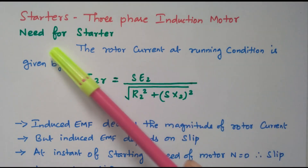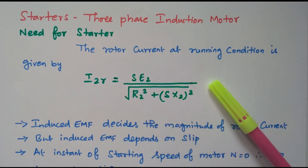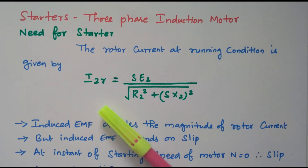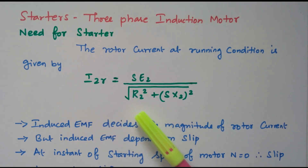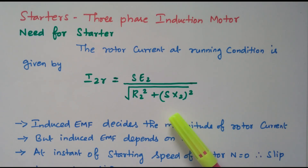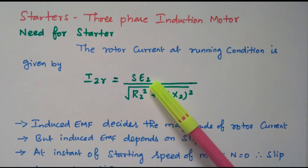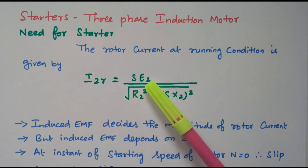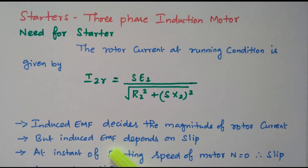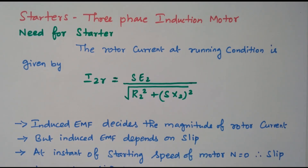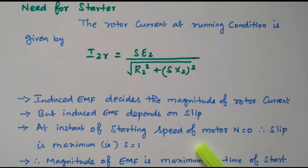Now we will go to the topic — the need for the starter. The rotor current at running condition is given by I2R equal to SE2 divided by the square root of R2 squared plus SX squared. The induced EMF decides the magnitude of the rotor current, E2, because the rotor current depends upon the induced EMF in the induction motor. The induced EMF depends upon the slip of the motor — the slip is the difference in speed between the synchronous speed and actual speed. So at the instant of starting, the speed of the motor is 0, so the slip is maximum: S equal to 1.